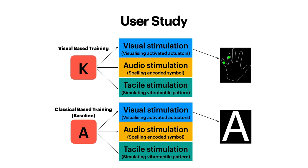In our visual-based training, the actuators that encode the symbol are visualized, whereas in the baseline the encoded character is printed on the screen. This baseline is a very common way of training participants and has been used in many studies before.